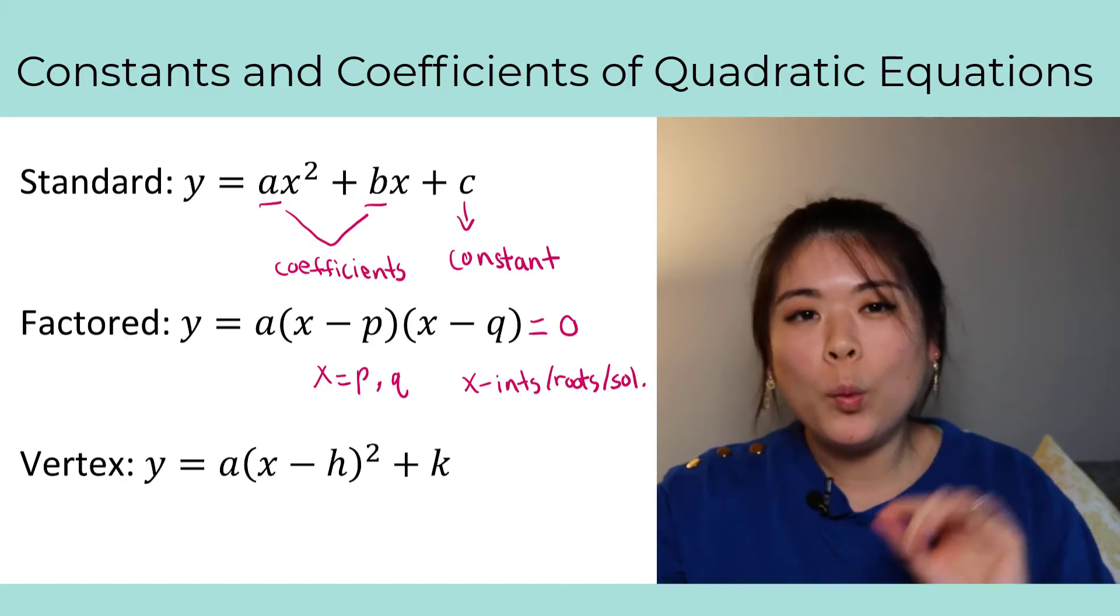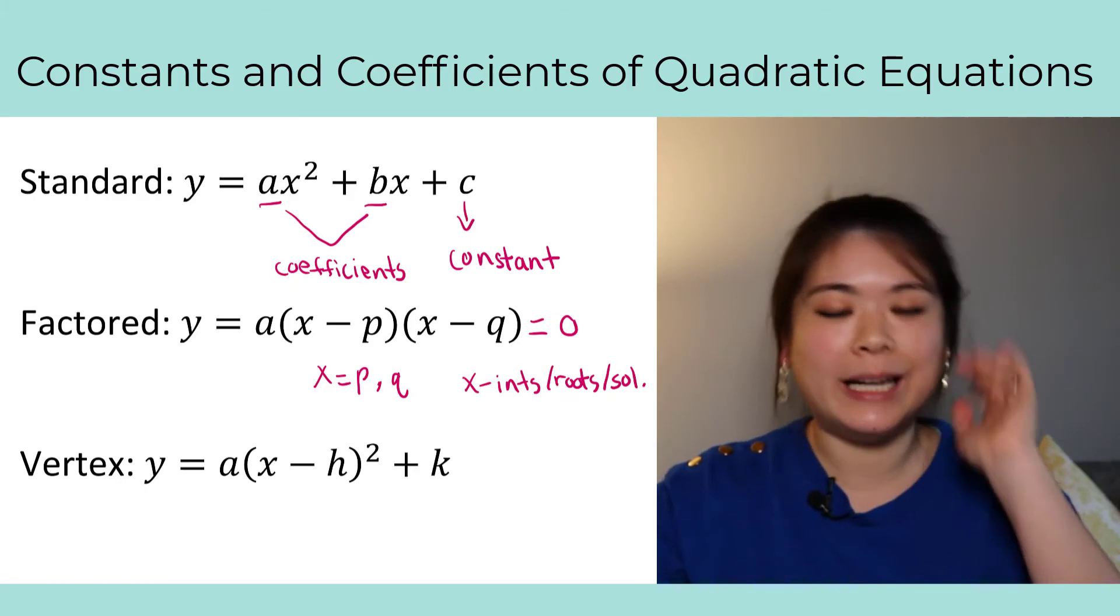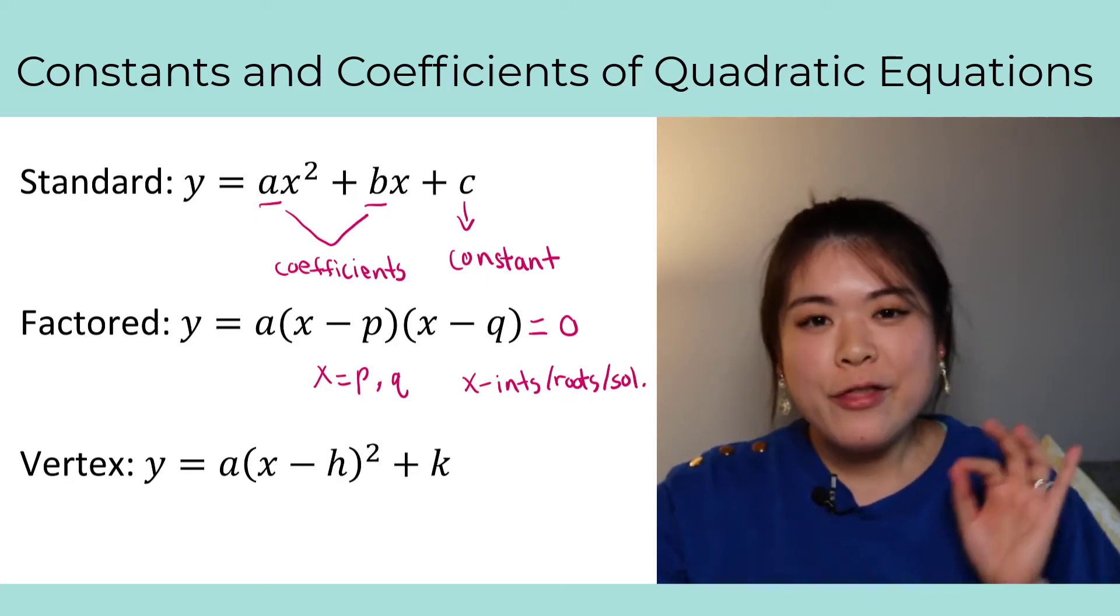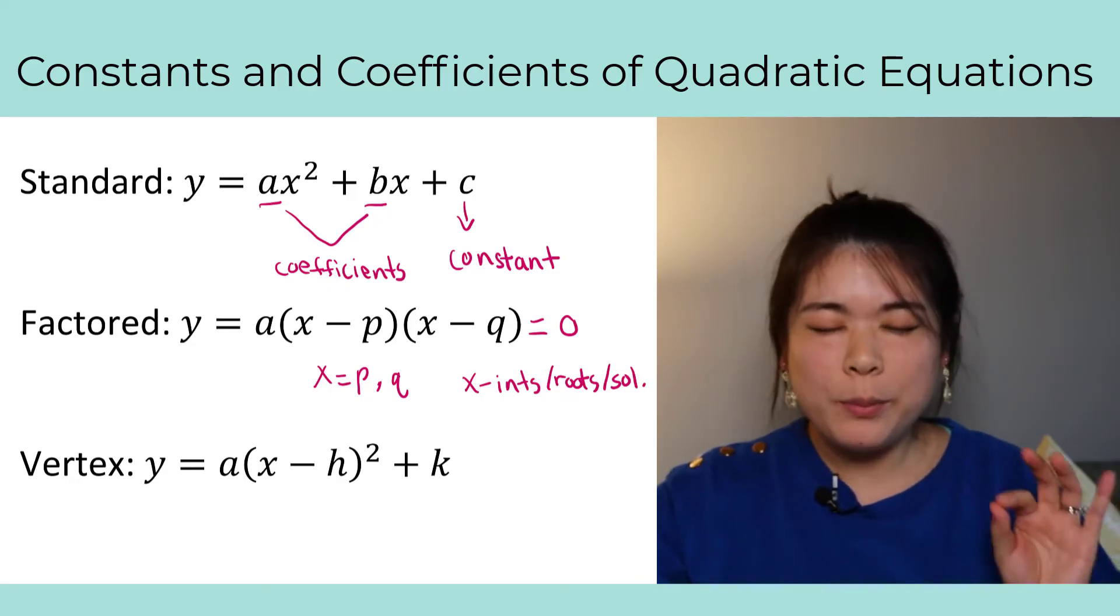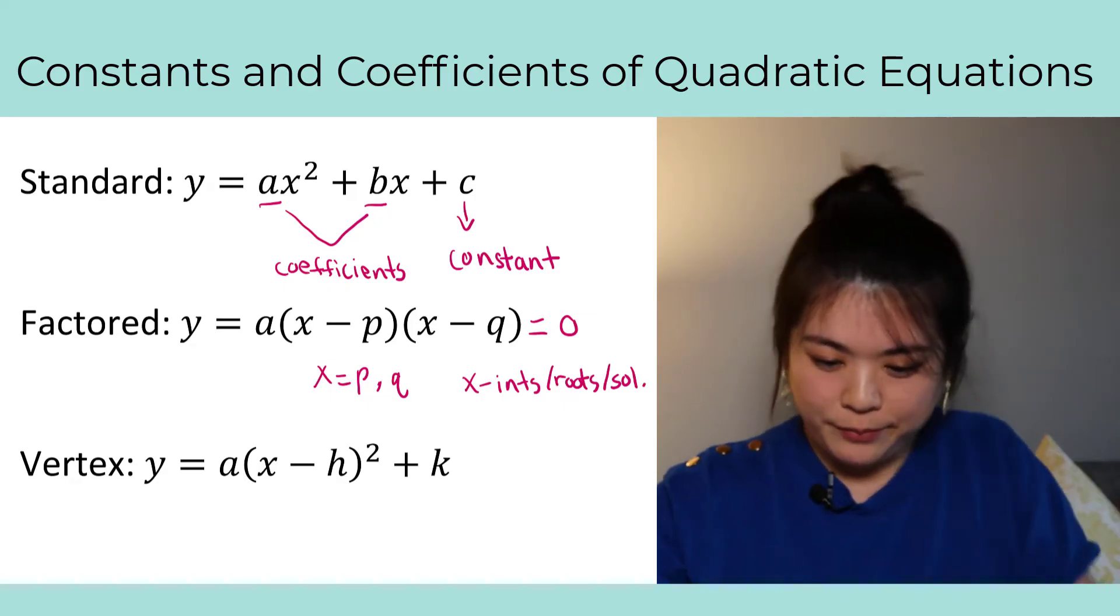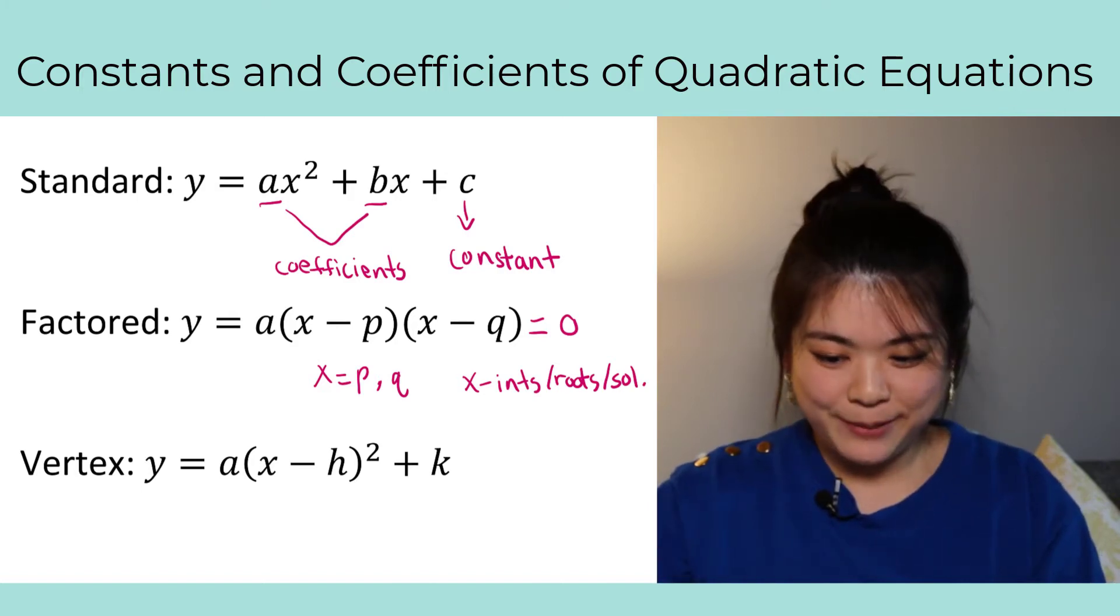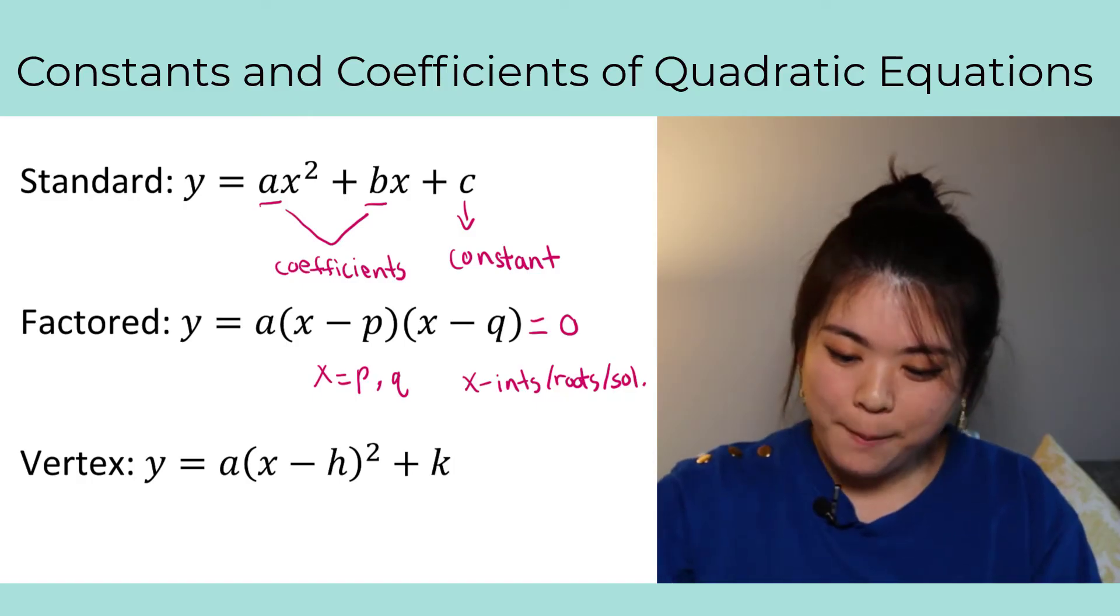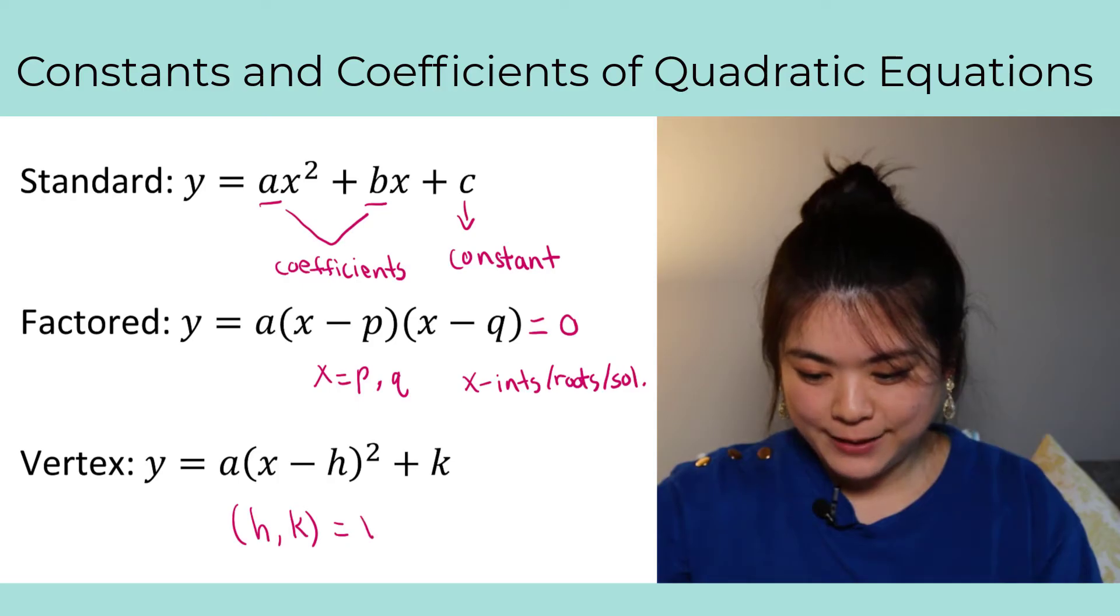So where x equals p and q, those are going to be your x-intercepts, roots, or solutions. Why do I keep using these other words? It's because I want you to know that they are interchangeable and all of these things tell you the same points. So there's your factored form. Keep in mind what these forms tell you. Factor form tells you the x-intercepts.